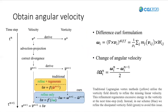We will begin with showing how we gain the angular velocity for the refinement. Since the vorticity of a certain point is twice of the local angular velocity, and the curl of linear velocity can be conventionally derived in SPH system. We use the differential form to get better accuracy of the vorticity. The angular velocity between two time steps can be expressed using vorticity. Traditional Lagrangian vortex model utilizes the vorticity field directly to refine the missing linear velocity. This refinement regenerates energy in the vorticity at the next time step. Instead, in our scheme, we refine the dissipated velocity field to avoid this issue.